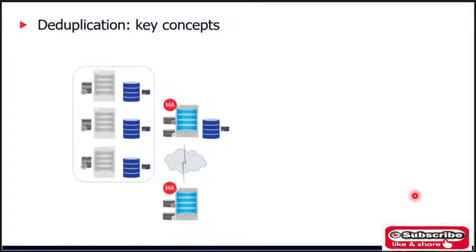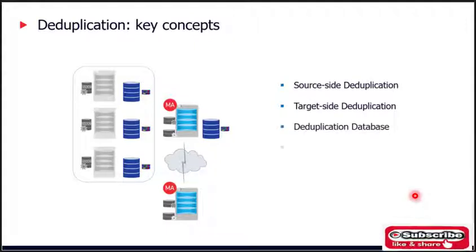Now I will cover a number of key areas to help you understand Commvault deduplication and the benefits it delivers. The main key concepts are: source-side deduplication, target-side deduplication, deduplication database, global deduplication, and Dash Copy. Let's start with source-side and target-side deduplication.